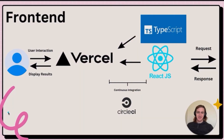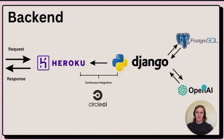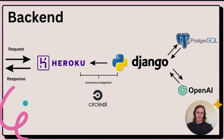We implemented a service-oriented architecture with our users interacting with our front-end deployment on Vercel, powered by TypeScript and ReactJS, and continuous integration using CircleCI. The requests were sent to the backend, which is deployed on Heroku, powered by Django and Python, continuous integration using CircleCI, a PostgreSQL database, and communicating with the OpenAI API to generate responses for the front-end.